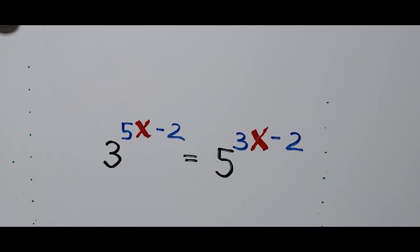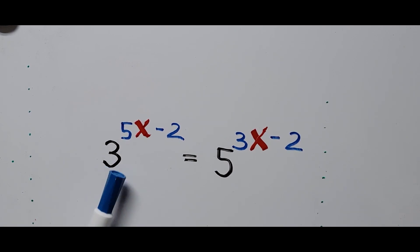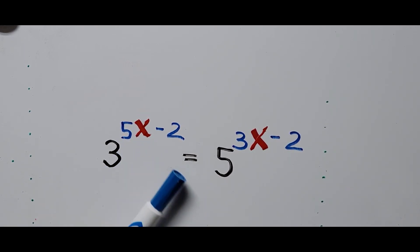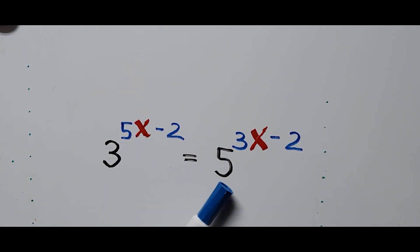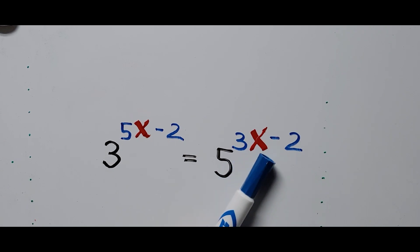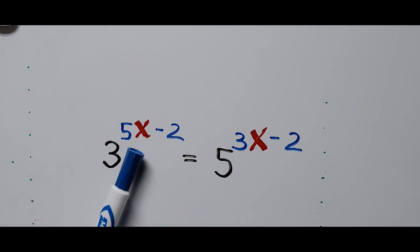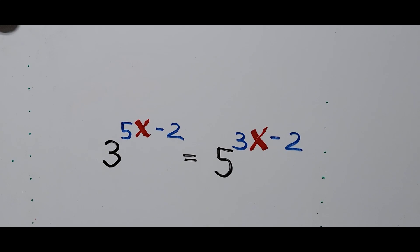Hello everyone, we have here an exponential equation: 3 to the power 5x minus 2 equals 5 raised to the power 3x minus 2, and we're going to solve for the value of x.